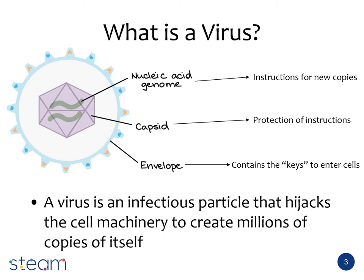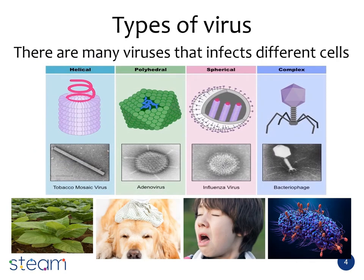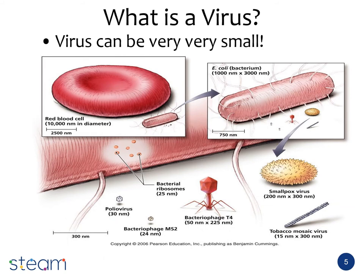There are many different types of viruses. These include helical, polyhedral, spherical and complex. Viruses can be extremely small. To make a comparison, a red blood cell is 2500 nanometres, whereas a bacteriophage called M5-2 is only 24 nanometres, which is a lot smaller.